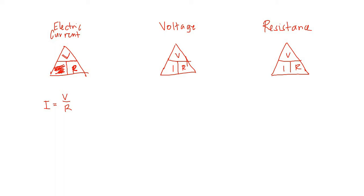For our second triangle, this is for voltage — we remove voltage from the triangle and you will have I times R. So the formula is V is equal to I times R, or voltage equals electric current times resistance. On the other hand, since we are looking for the formula of resistance, we erase resistance from the triangle, and that gives you R is equal to V over I, or voltage over electric current.